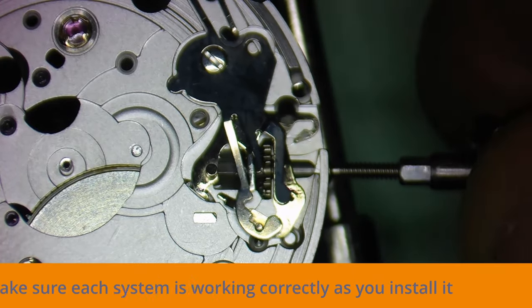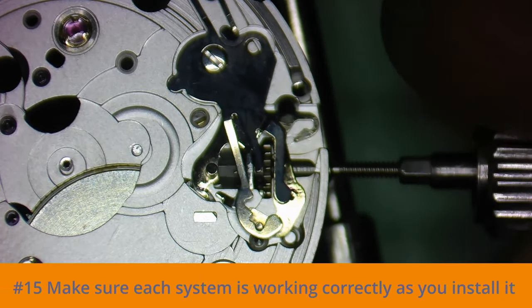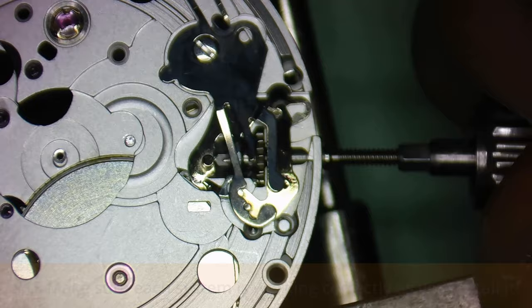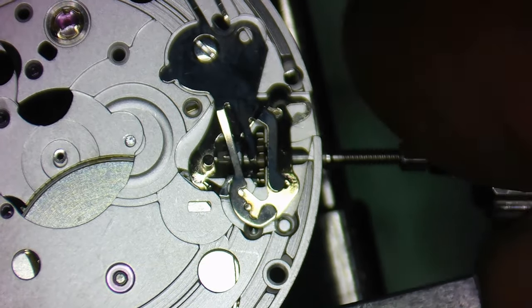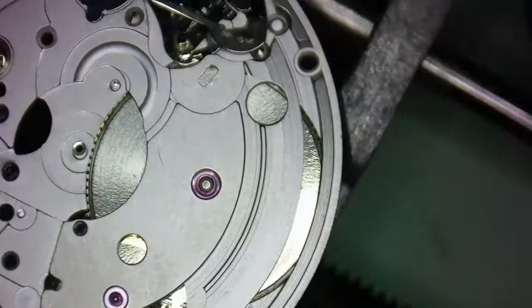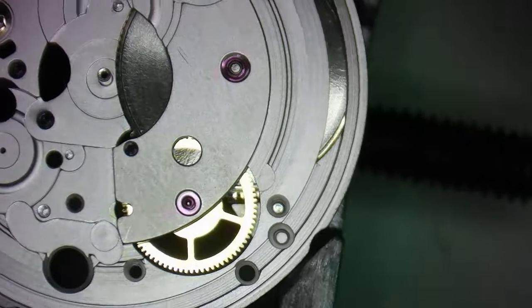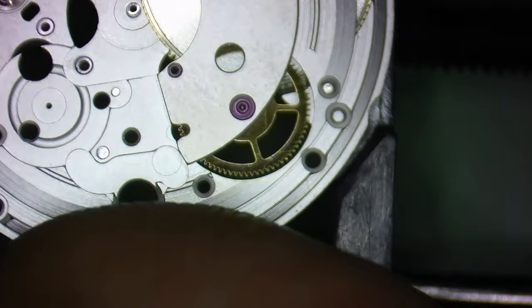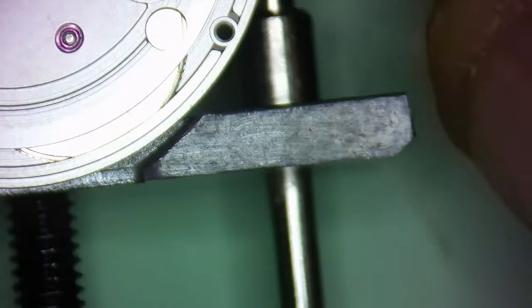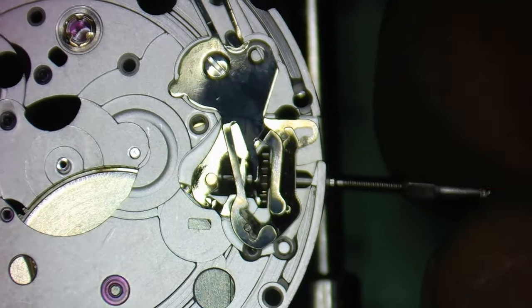When putting the movement back together, assemble one system at a time and check to make sure that it's functioning correctly before moving on to the next system. The typical assembly order is usually going to be the keyless works first, then the barrel and bridge parts, the powertrain, the pallet fork, and then the balance wheel.